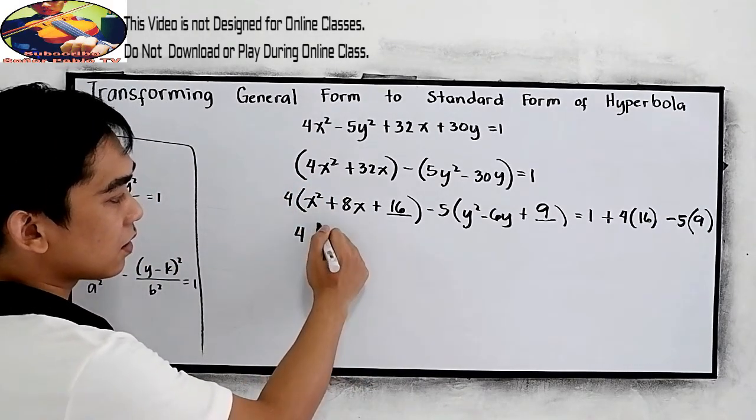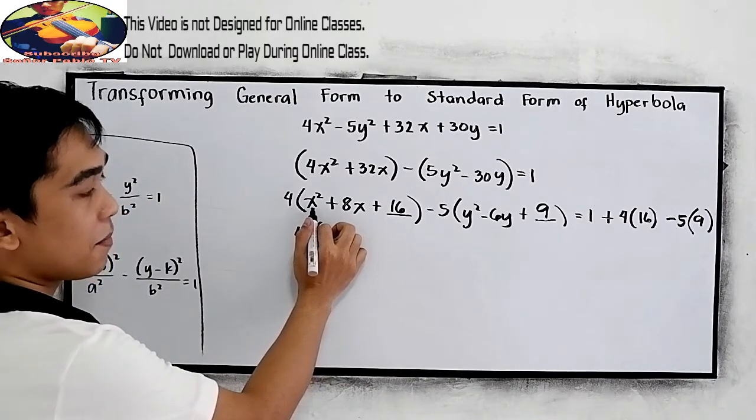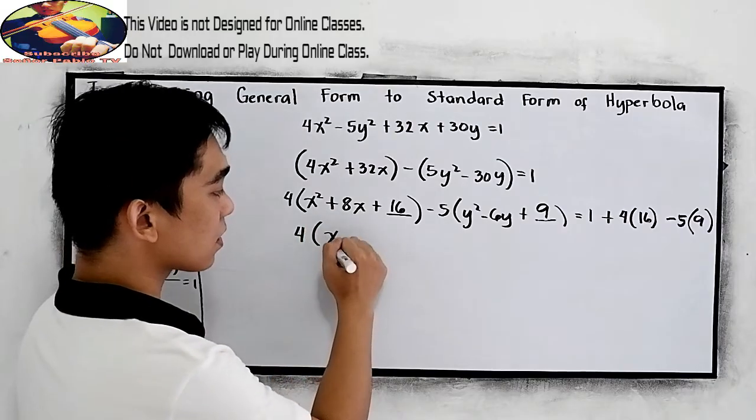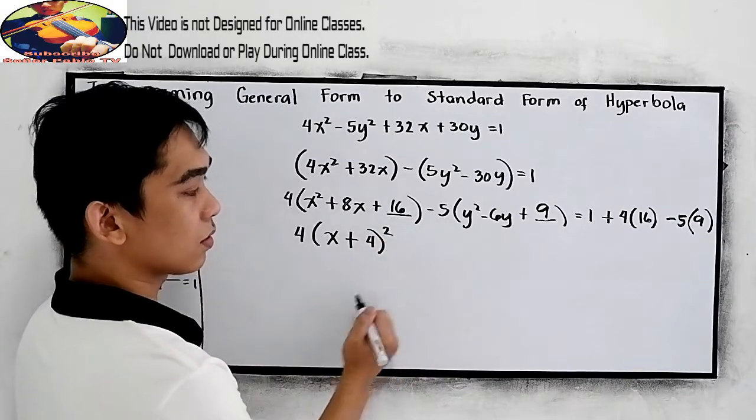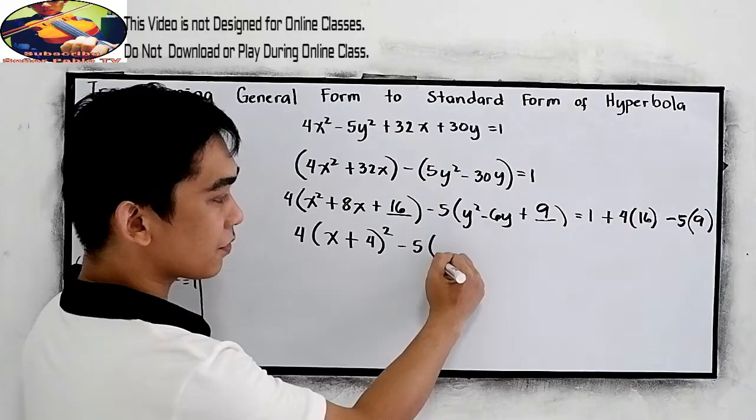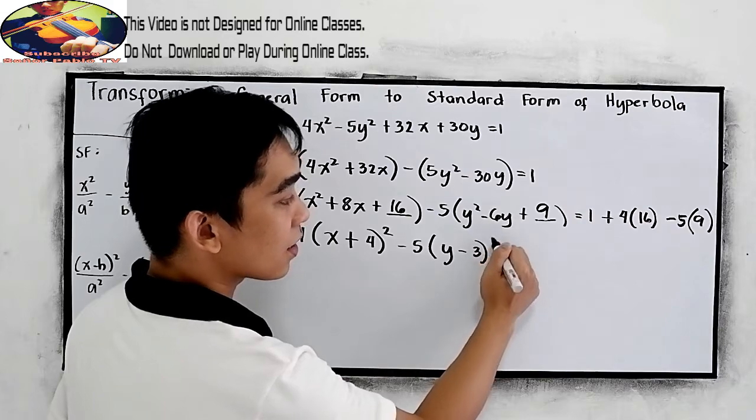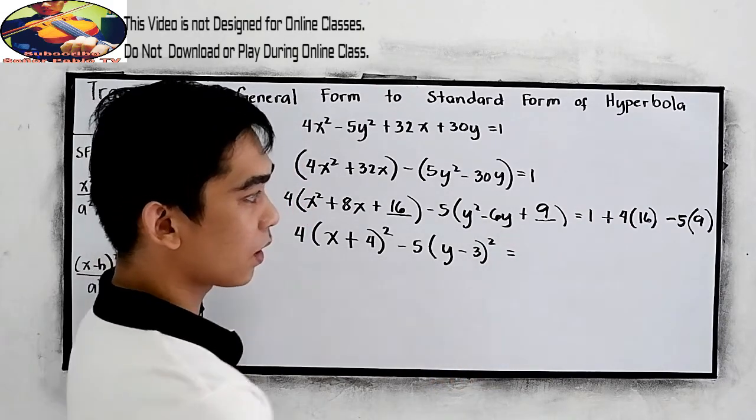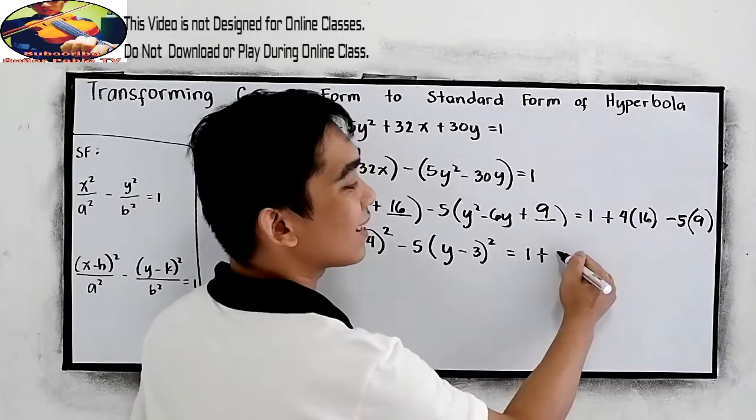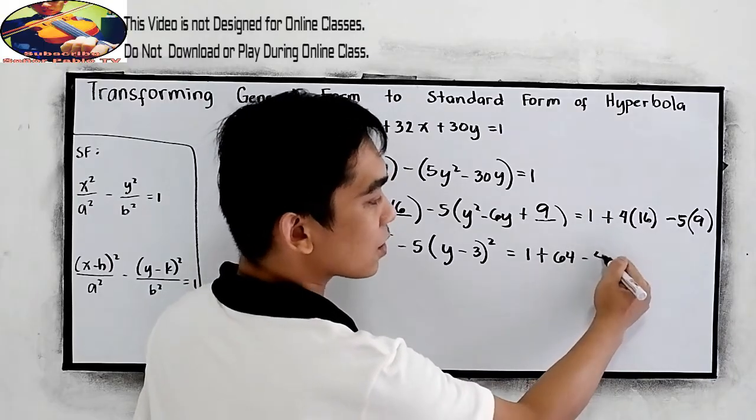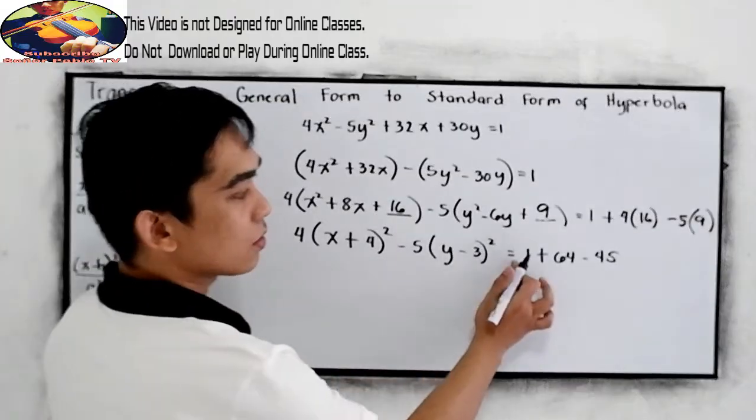Now, we have 4, open parenthesis. Make it a square of a binomial. So, x plus square root of 16, 4, raise to 2. Minus 5y minus square root of 9, 3, raise to 2 is equal to 1 plus 4 times 16, that is 64, minus 45.